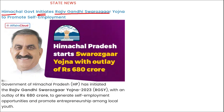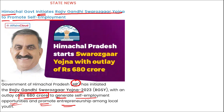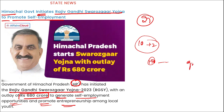The Himachal Pradesh government has initiated the Rajiv Gandhi Swarozgar Yojana with an outlay of ₹680 crore to generate self-employment opportunities and promote entrepreneurship among local youth. In the initial phase, the scheme covers hiring of e-taxis by government departments and local authorities. The government provides 50% subsidy on the purchase of e-taxis. Eligibility: Himachal residents above 27 years of age with 7 years of driving experience, educational qualification of 10+2, and a valid driving license and Aadhaar card. Chief Minister of Himachal Pradesh: Sukhvinder Singh Sukhu; Governor: Shri Pratar Sukhla.